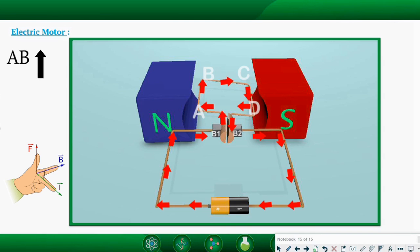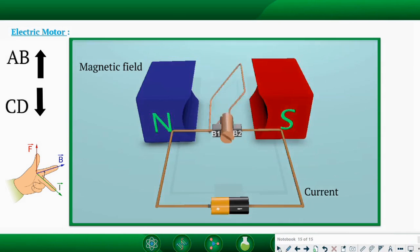When we come to arm CD, applying the same rule with the direction of magnetic field and current, Fleming's left-hand rule shows the movement is downward. Overall, the coil ABCD rotates clockwise, but things change after half a turn.